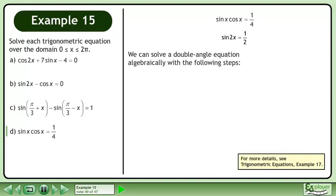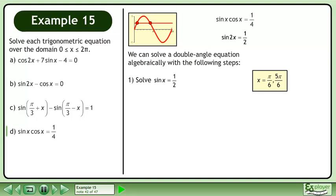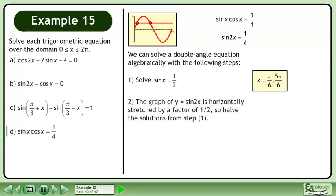We can solve a double angle equation algebraically with the following steps. First, solve sinx equals one half. This gives us x equals pi over 6 and 5pi over 6. Next, the graph of y equals sin2x is horizontally compressed by a factor of one half, so halve the solutions from step 1. This gives us x equals pi over 12 and 5pi over 12.